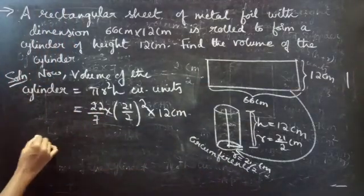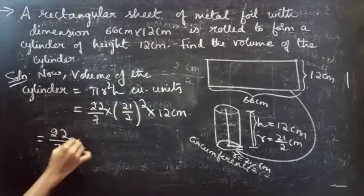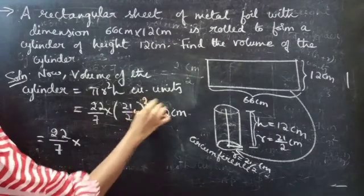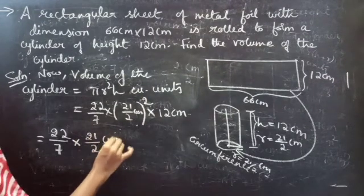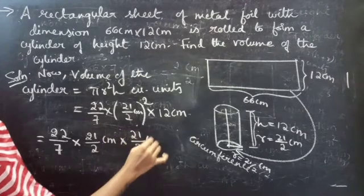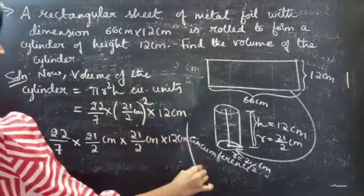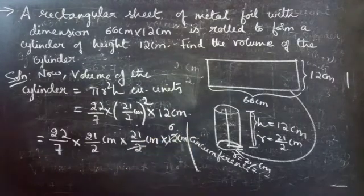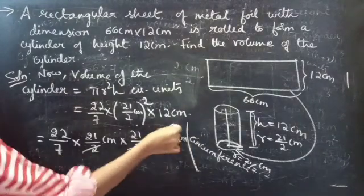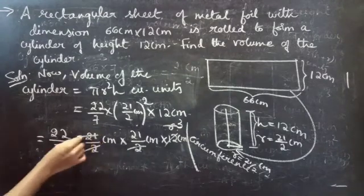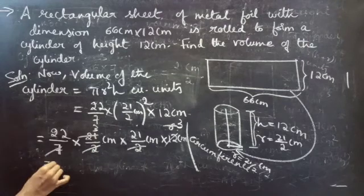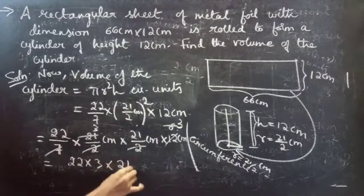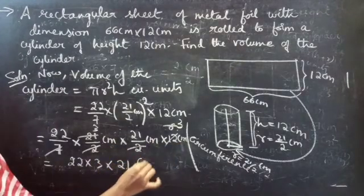We write it as (22/7) × (21/2 cm)², which expands to (21/2) × (21/2) × 12. Simplifying: 7s cancel with 21, 2s cancel, giving us 22 × 3 × 21 centimeter cubed.